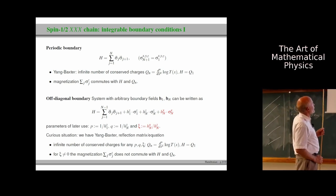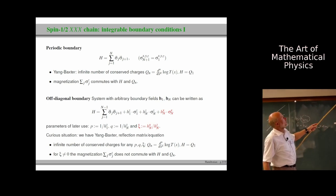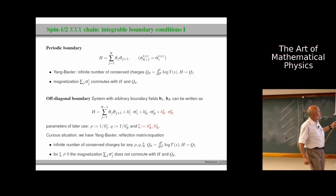The magnetization, which is the sum of all the sigma z components, for instance the sigma z components, commutes with all of these operators. So there's H, the Qn's, T. Not so for the, sometimes it's called off diagonal boundaries, I mean non-parallel boundary fields.